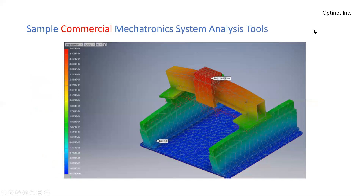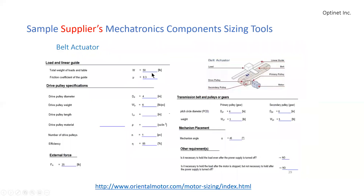Here's another example using Nastran in CAD, where we can see a positioning stage — a mechatronic system — being heated up by a motor driving the stage, which causes deformations. There are fins designed to ease the dissipation of heat into the environment, and this tool is used for analyzing and optimizing the design.